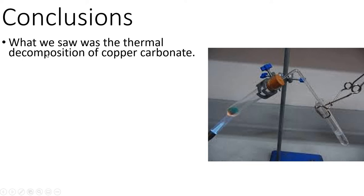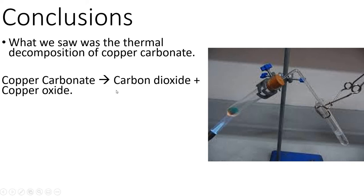What we actually saw in this reaction was the thermal decomposition of copper carbonate, as we said in the aims. Our equation is going to look like this: we're taking copper carbonate and turning it into carbon dioxide, which was lost to the atmosphere as bubbles, and also copper oxide, which was the black solid left behind at the end. You'll notice that we started off with one substance — copper carbonate — and ended up with two different substances: carbon dioxide and copper oxide.